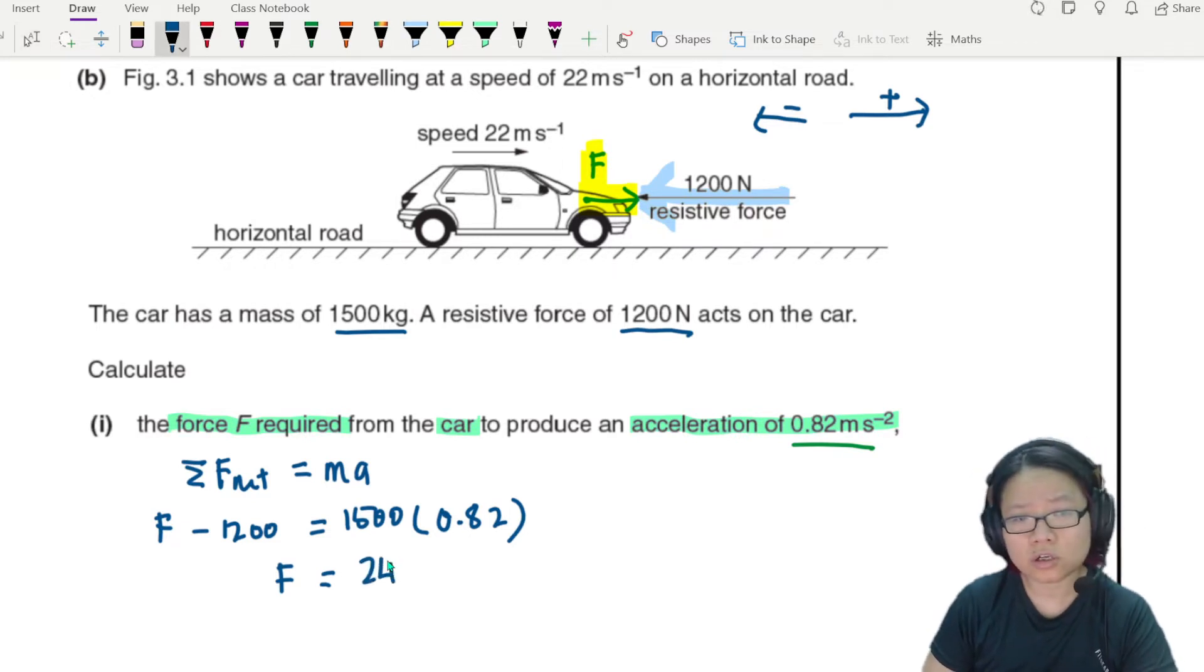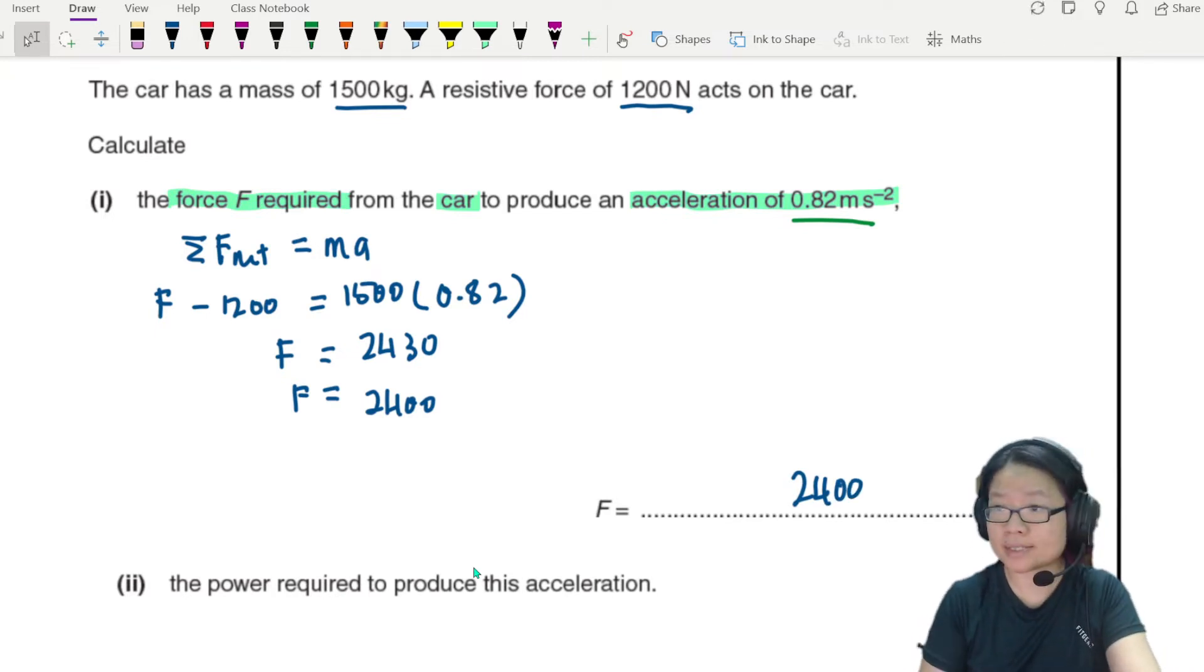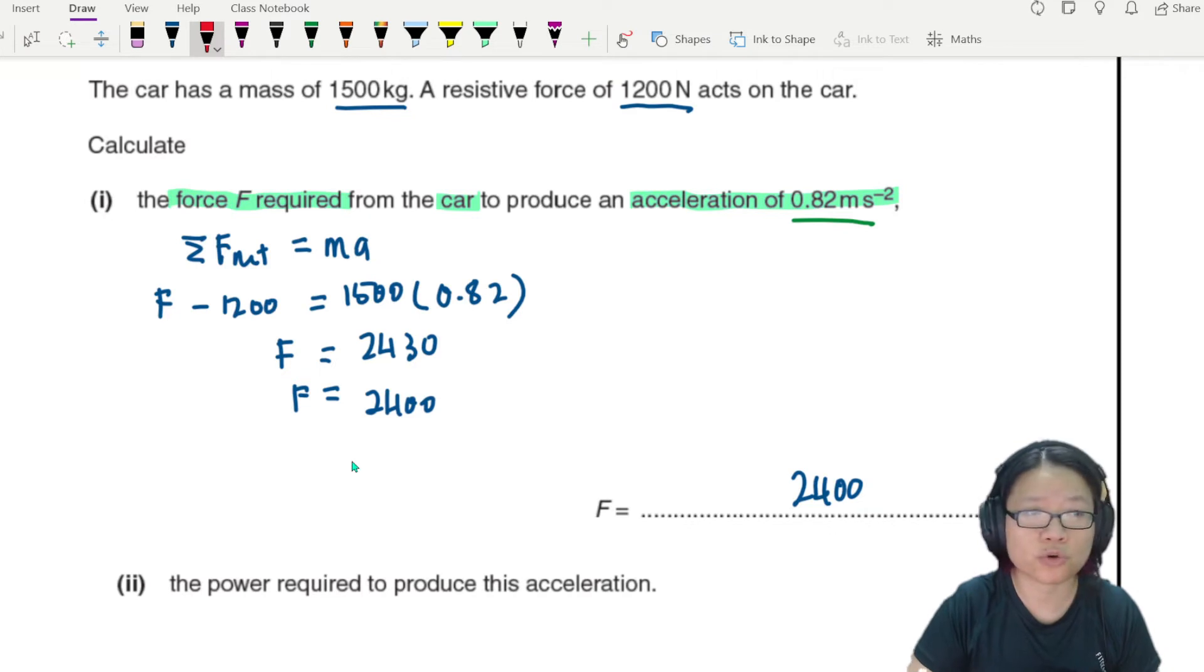2430. If you want you can write it in two significant figures, 2400. Three marks. Let's look at the marks. One mark if you find the net force correctly. You write something like net force is equal to MA. The other mark is when you substitute everything correctly, 1200, this one, one mark, and then the final mark is the answer. C1, C1, A1.